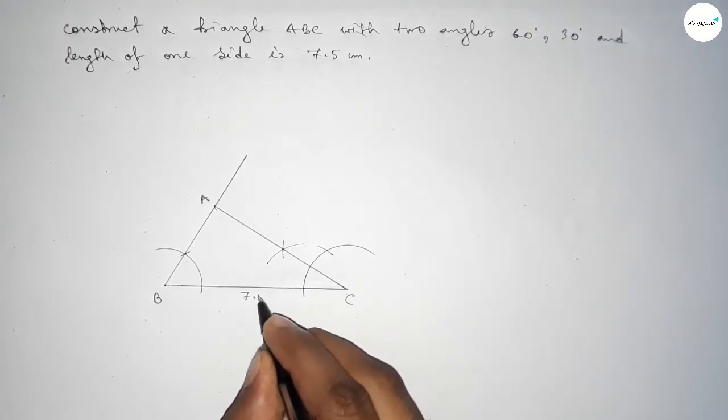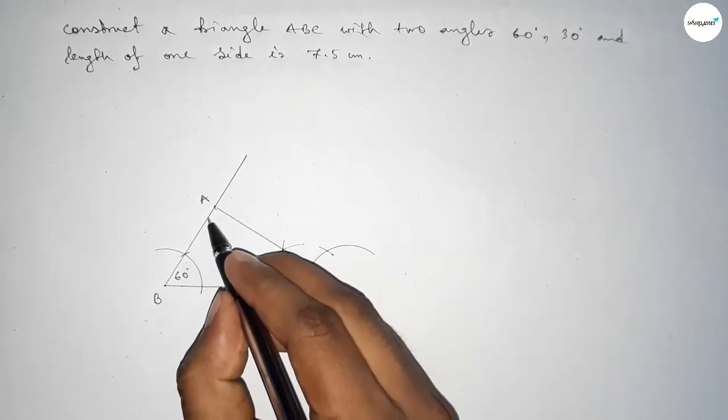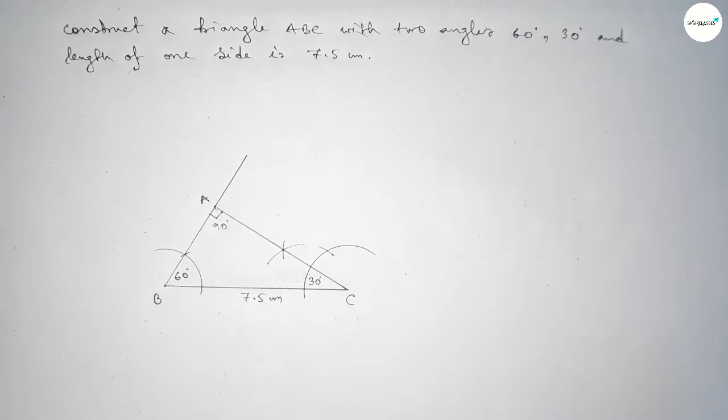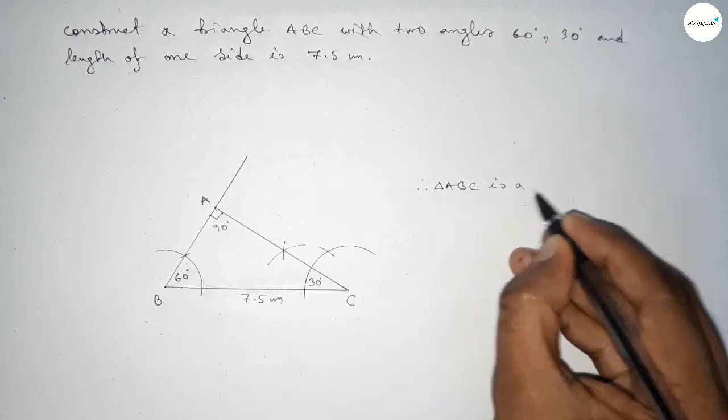So this is 7.5 centimeters, this angle is 60 degrees, this angle is 30 degrees, and angle A is obviously 90 degrees since 30 plus 60 equals 90, and 90 plus 90 equals 180.